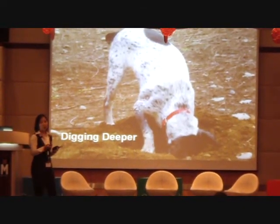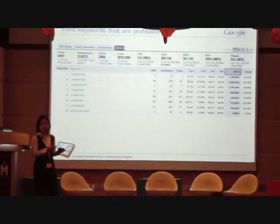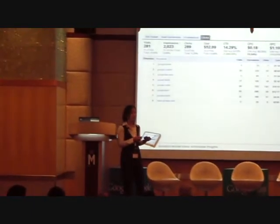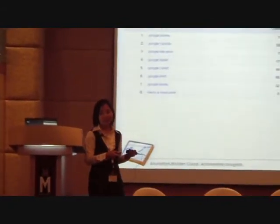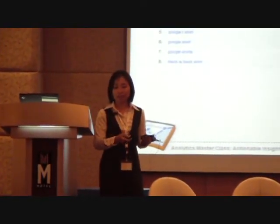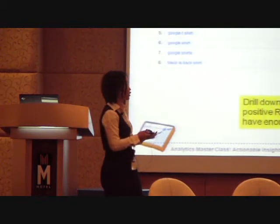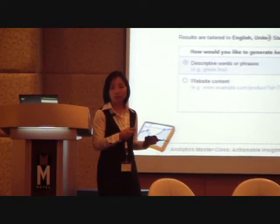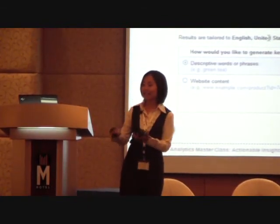We can dig even deeper into keyword-level data to get more ROI. Remember the ad group with 500% ROI? I want to increase ROI even further by seeing which keywords are actually delivering the best ROI. Here, the first keyword gives me an ROI of 1,709%. So what I will do is expand that particular keyword — either by thinking of new keywords related to Google T-shirts, or by using the Google keyword expansion tool to get more keyword ideas. Put them in the campaign, see how it works. As Barbara said: test, test, and test.